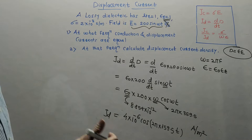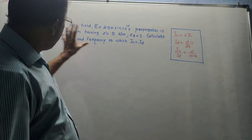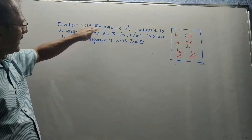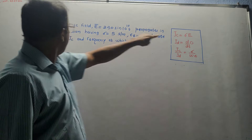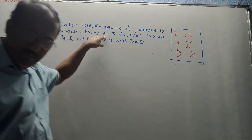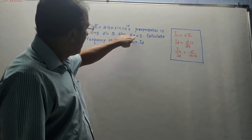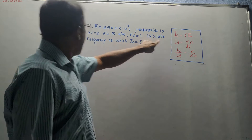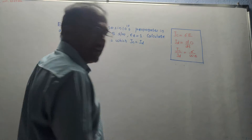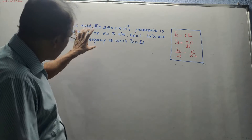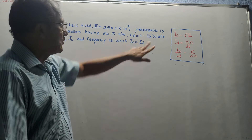Now let us solve another numerical of a different type. The electric field E-bar is 250 sin(10¹⁰ t) propagating in a medium having sigma as the conductivity in siemens per meter, and epsilon_r equals 1. We need to calculate JD (displacement current density), JC (conduction current density), and the frequency at which JC equals JD.